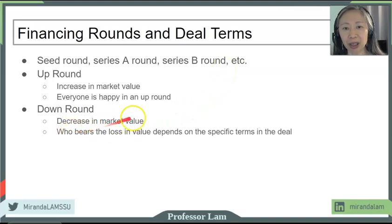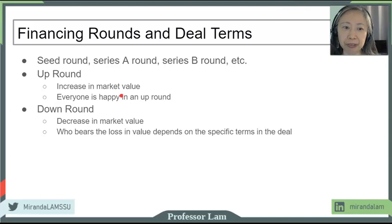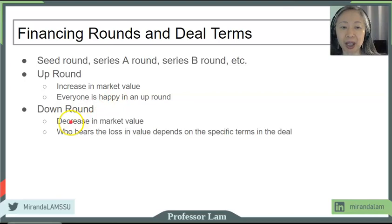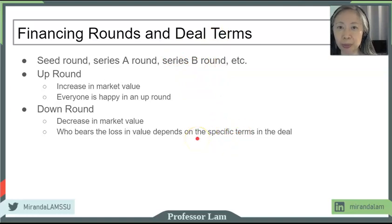The deal terms may include some terms for the up round as well — sometimes that may include a bonus to the entrepreneurs. But very few people will have hard feelings during an up round because everything is good. The down round is when people really look at the fine print in the deal terms and figure out who is going to bear the losses.